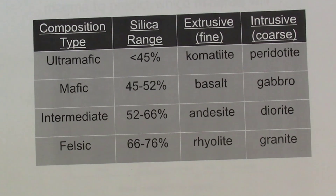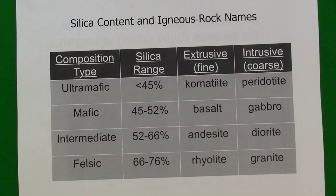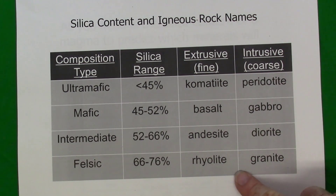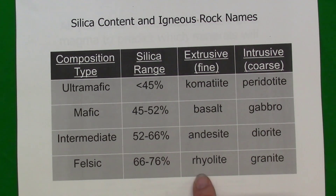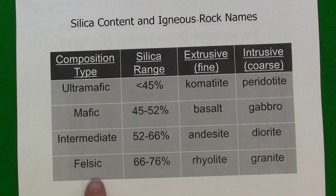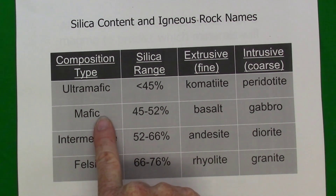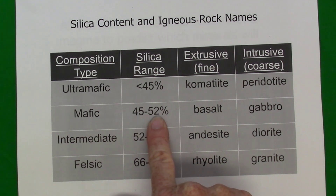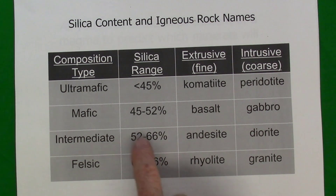In general, we can name igneous rocks based on the composition or minerals present, and whether the rock formed extrusively or intrusively. Here's a diagram showing common crystalline igneous rocks that form from magma intrusively or from lava extrusively. They're defined based on whether they're intrusive or extrusive and also based on the silica content, which we can characterize as felsic (high silica), mafic (relatively low silica), intermediate, or ultramafic. Ultramafic igneous rocks exist mostly in the mantle with very low silica content, and we don't encounter many ultramafic rocks at the surface.